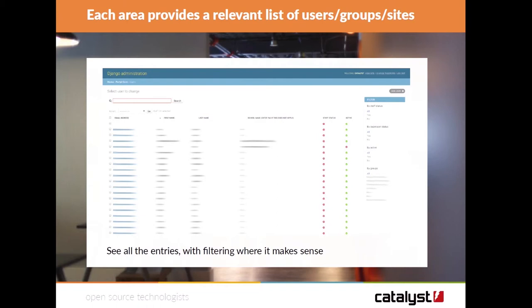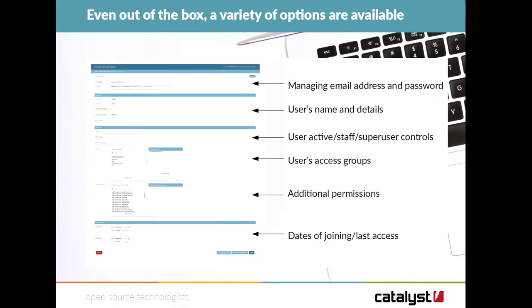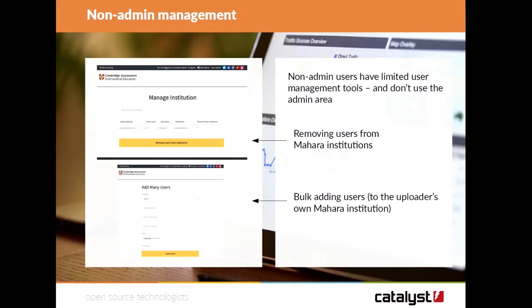You can see here we have just a list of users. You can find people, see who is staff, who is an administrator, and do filtering — all the things you'd normally expect in an administrative area. You can add users manually, and there are tools for staff to add their own users. We can give access at different levels depending on what your organization needs.